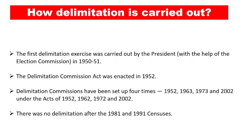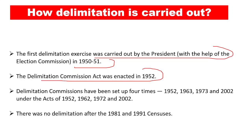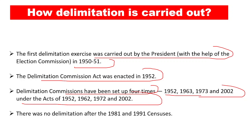The first delimitation exercise was carried out by the President in 1950-51, and the Delimitation Act was enacted in 1952. The delimitation commission has been set up four times: in 1952, 1963, 1973, and 2002, under the acts of 1952, 1962, 1972, and 2002. There was a lag between these years because there were some political problems. There was no delimitation after the 1981 and 1991 censuses, and after the 2011 census as well, delimitation did not happen. That is why we follow the Delimitation Act of 2002.